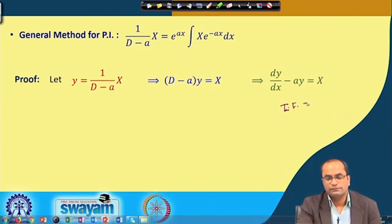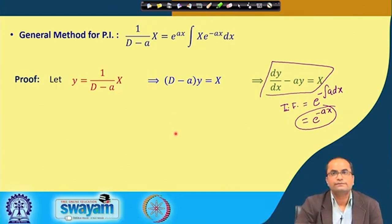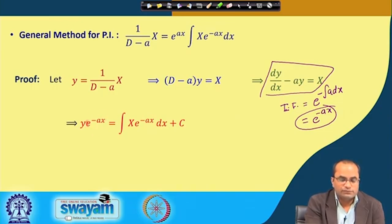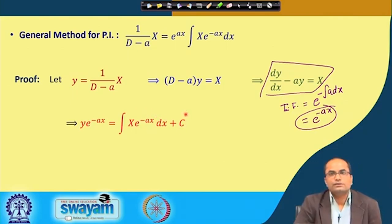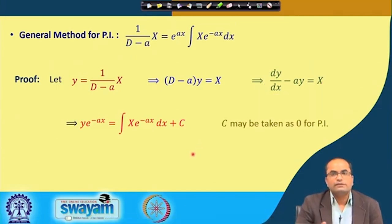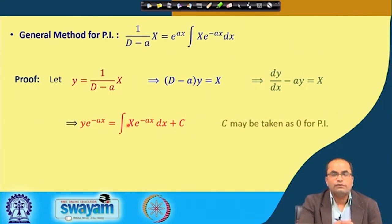The integrating factor of this equation is e^(−∫a dx) = e^(−ax). Once we know the integrating factor, we can write the solution: y·e^(−ax) = ∫X·e^(−ax) dx + c. The constant of integration is not important here because we are looking for a particular solution. For any value of c that will be a solution, so we set c = 0 to get the simplest particular solution.